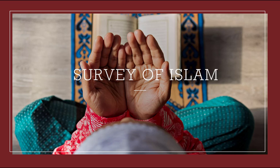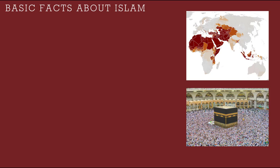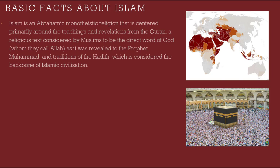Hey everyone! Today we are going to be looking at a survey of Islam. Islam is one of the Abrahamic monotheistic religions that we have discussed so far in our lecture. We are going to always start with some basic facts about the religion itself. A good definition would be that Islam is an Abrahamic monotheistic religion centered primarily around the teachings and revelations from the Quran, a religious text considered by Muslims to be the direct word of God, whom they call Allah, as it was revealed to the Prophet Muhammad.